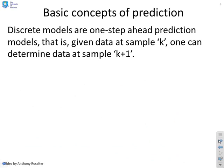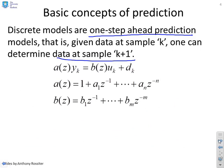The basic concepts of prediction: discrete models are usually written implicitly as one-step-ahead prediction models. That means if you've got data from sample k, you can use your transfer function model to determine the data at sample k plus 1.